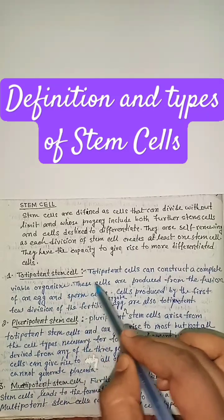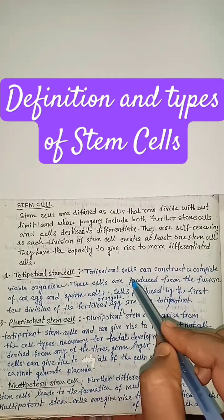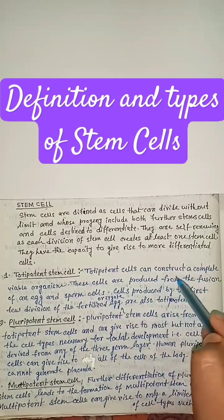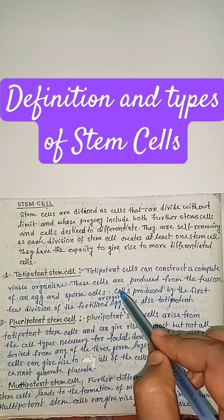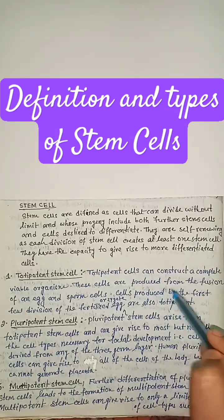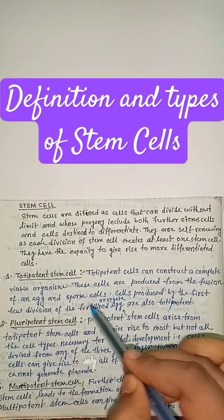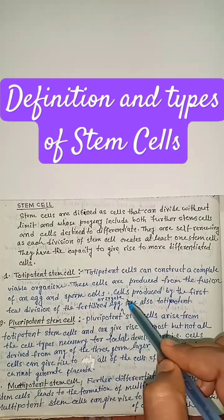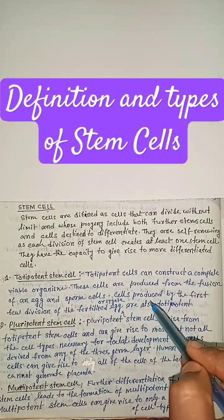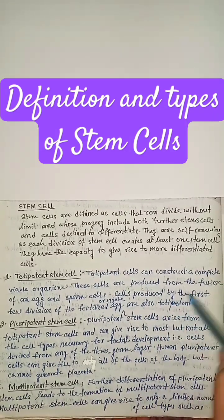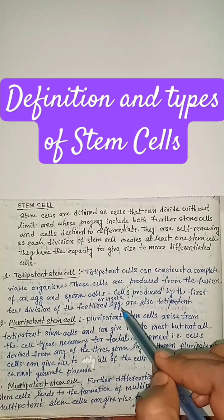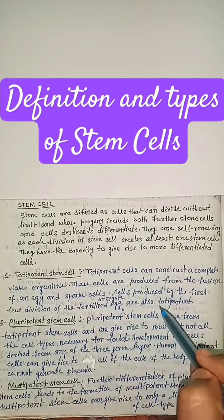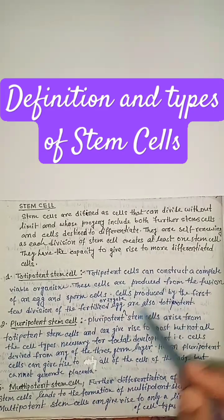Totipotent stem cell. Totipotent cells can construct a complete viable organism. These cells are produced from the fusion of an egg and sperm cells. Cells produced by the first few divisions of the fertilized egg or zygote are also totipotent.